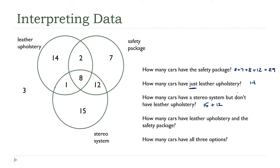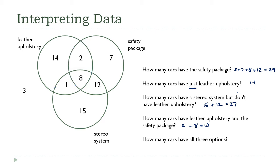Leather upholstery and the safety package together is this section — there are 2 that have leather and the safety package, and 8 more that have leather and the safety package plus the third option, so there are 10 in that category. Finally, how many cars have all three options? That's this group here, and there are just 8 of them.